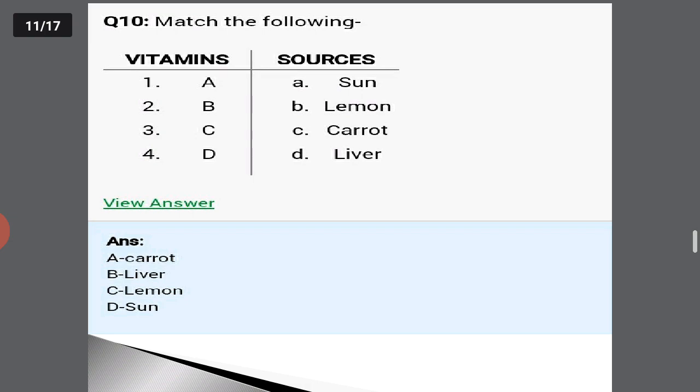Match the following. Vitamin A is obtained from carrot. Vitamin B is obtained from liver. Vitamin C is obtained from lemon. Vitamin D is obtained from sunlight — the sun is the rich source of vitamin D. Lemon and orange are the rich sources of vitamin C.